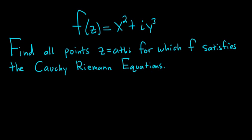Find all points z equals a plus bi, for which f satisfies the Cauchy-Riemann equations. Let's do this solution.